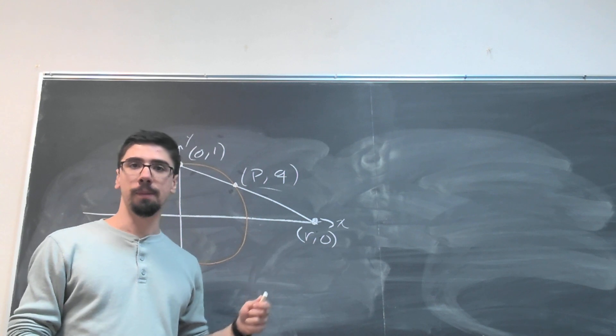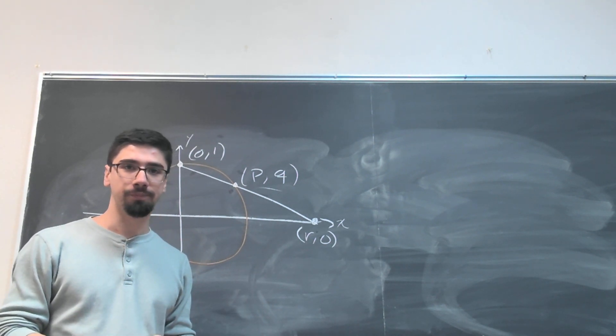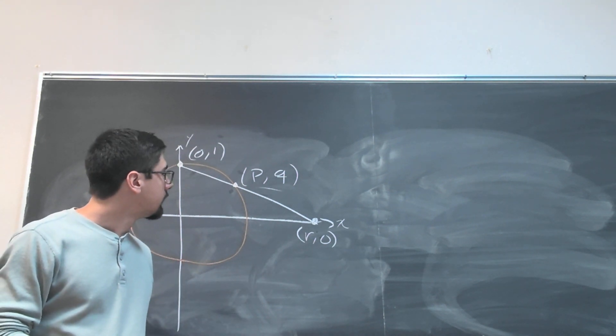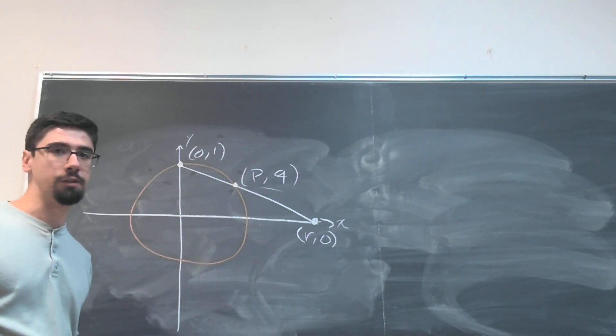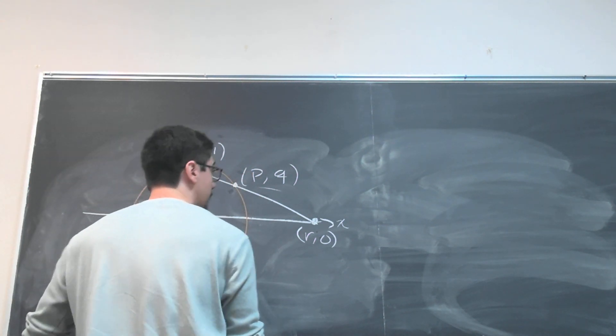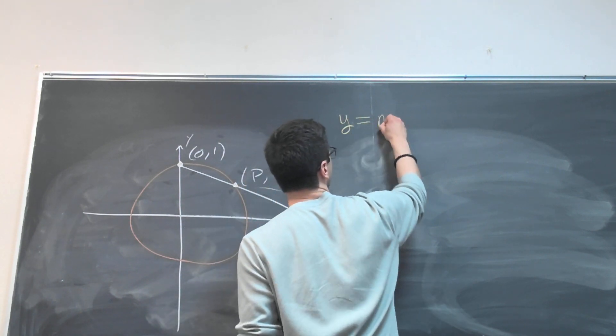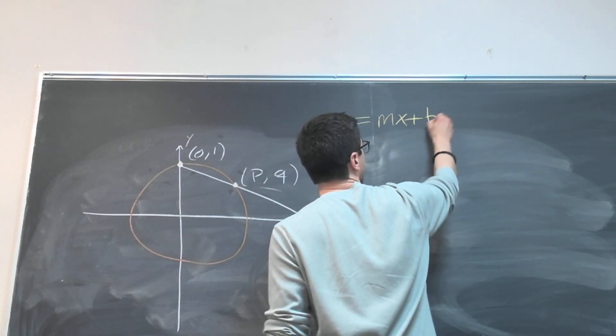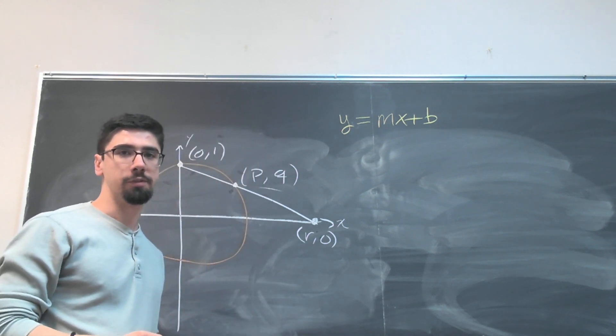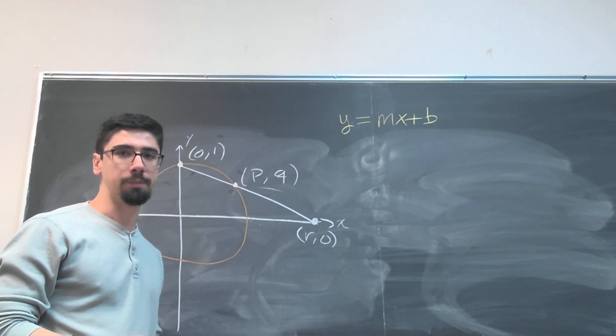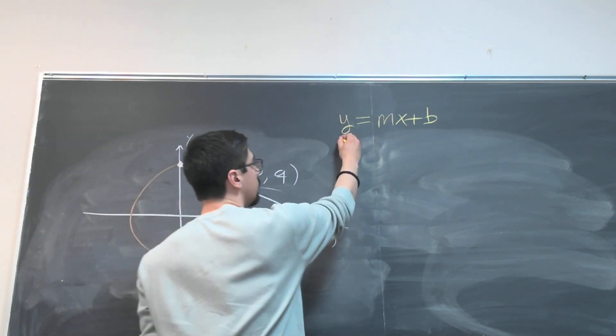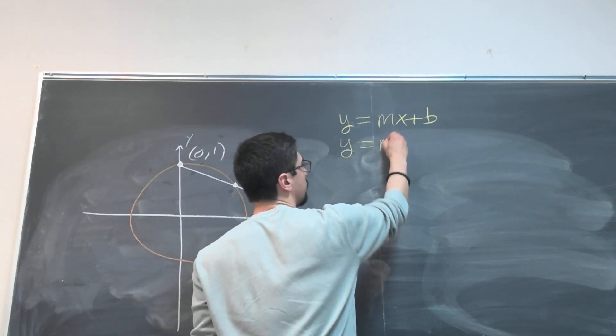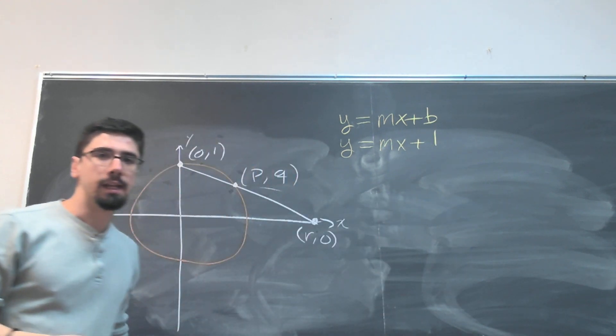So let's see here. Well, this is just a line and so we just have the ingredients for a line. Every line is given by the equation y equals mx plus b, where m is our slope and b is our y-intercept. Well clearly the y-intercept is 1, so we can set b equals 1, so y is equal to mx plus 1.